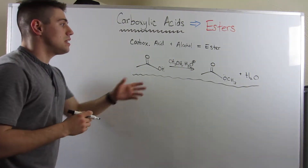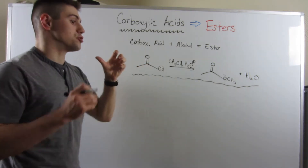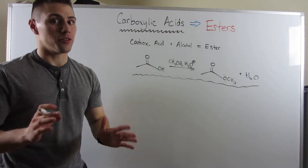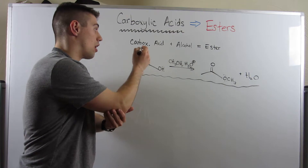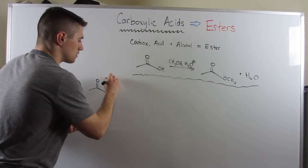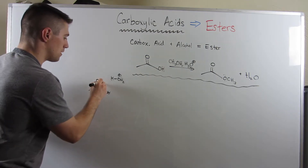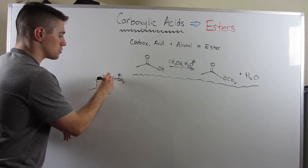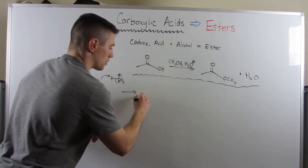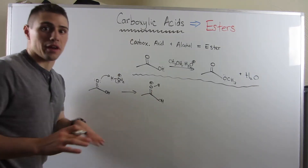You need H3O+ because, just like in carbonyls, carboxylic acids aren't going to jump into a reaction — they need to be activated. How do we activate a carbonyl? We need to protonate our carbonyl oxygen. So the first step: hydronium donates a proton, the electronegative oxygen grabs the hydrogen, and the electrons go back onto oxygen. We protonate our carbonyl to make it reactive.